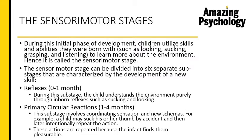The second sub-stage, from one to four months, is the primary circular reaction. During this stage, there is a coordination of different senses and the formation of new schema. For example, if a child accidentally sucks their thumb and then repeats the action because they found it pleasurable, that is a coordination of the sucking sensation and the creation of a new schema based on repeating the pleasurable action.